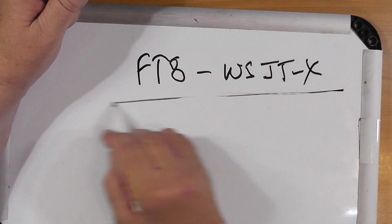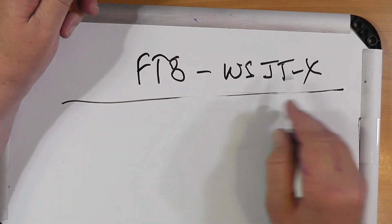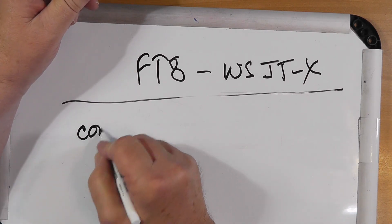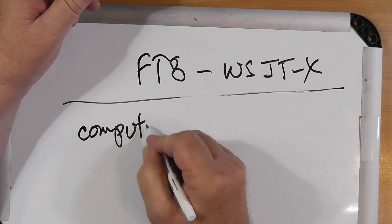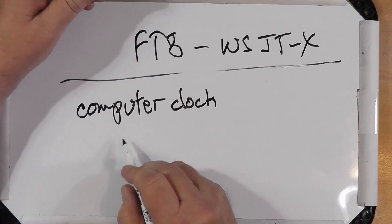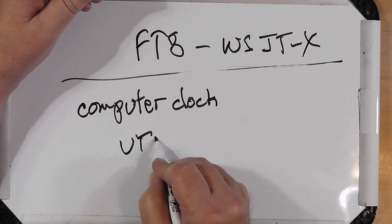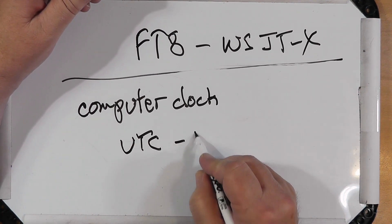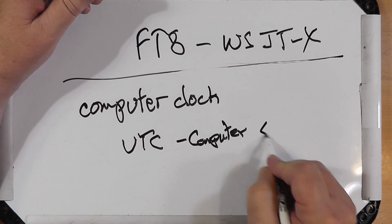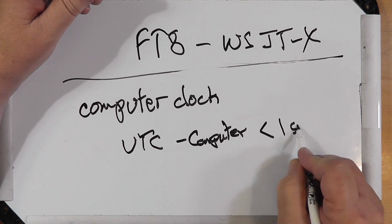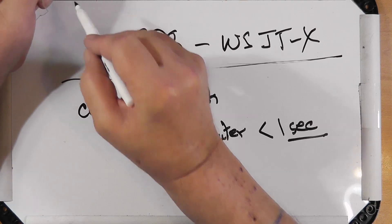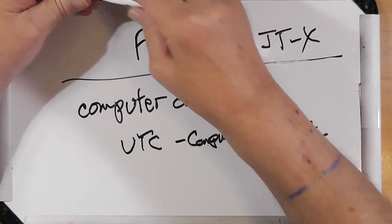All these modes that are in WSJTX have a requirement that your computer clock be accurate — specifically, the difference between UTC and your computer clock must be less than one second. One second.